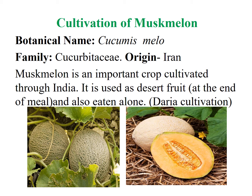Musk Melon is an important desert crop cultivated throughout India, also called as Cantalo. It is commonly grown in riverbeds and occupies about 80% area under the basin land of Indian rivers. The botanical name of this Musk Melon is Cucumis melo. Their family is Cucurbitaceae. Their origin is from Iran.